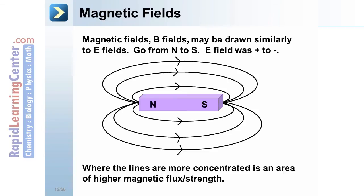Where the lines are more concentrated in an area, that area has a higher magnetic flux, or strength.